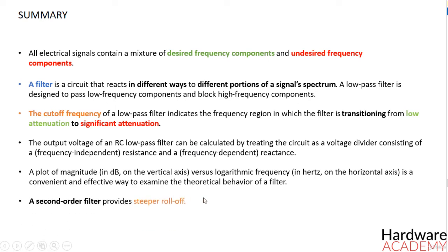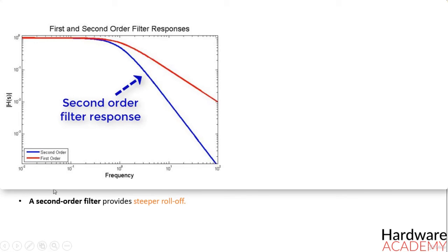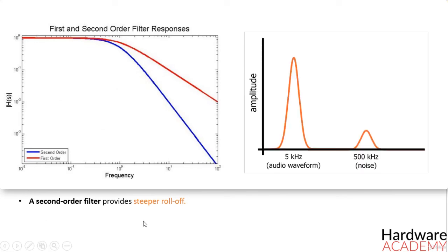A second order filter provides a steeper roll off. This second order response is helpful when a signal does not provide a wide band of separation between desired frequency components and undesired frequency components.